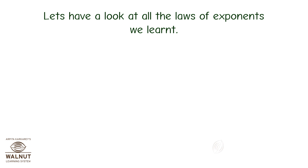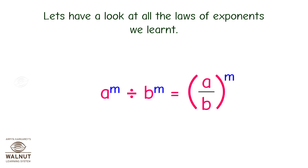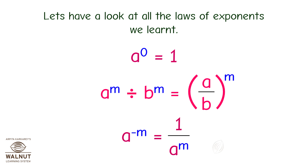Let's have a look at all the laws of exponents we learnt. A raised to M multiplied by A raised to N is equal to A raised to M plus N. A raised to M, raised to N is equal to A raised to M multiplied by N. A raised to M divided by B raised to M is equal to A upon B, the whole raised to M. A raised to 0 is equal to 1.